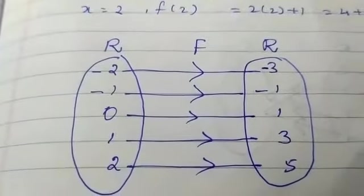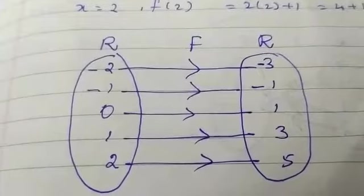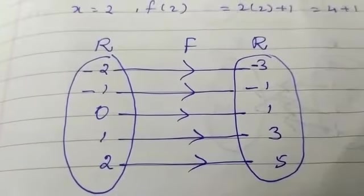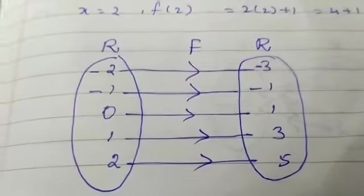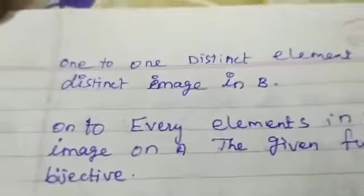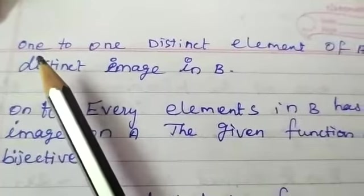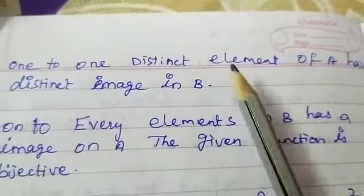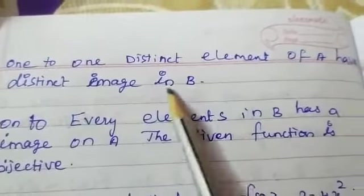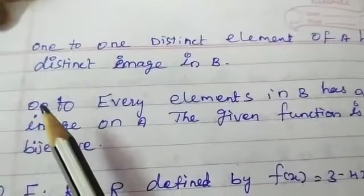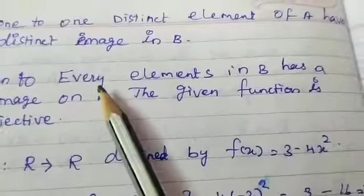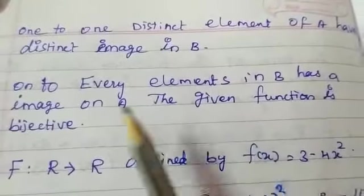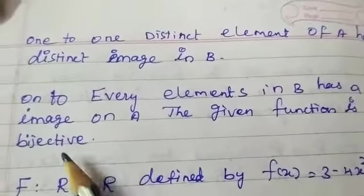This is the arrow diagram for this function. From the arrow diagram, it is a one-to-one function where distinct elements of A have distinct images in B. It is also onto because every element in B has a pre-image in A. Therefore, the given function is bijective.